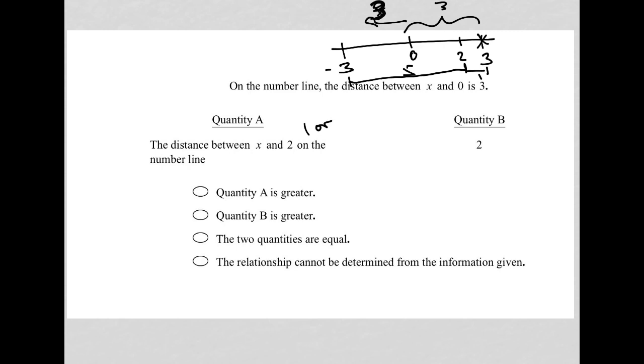Quantity B just says the value 2. So, quantity B is larger if x is at positive 3. But quantity B is smaller if x is at negative 3.